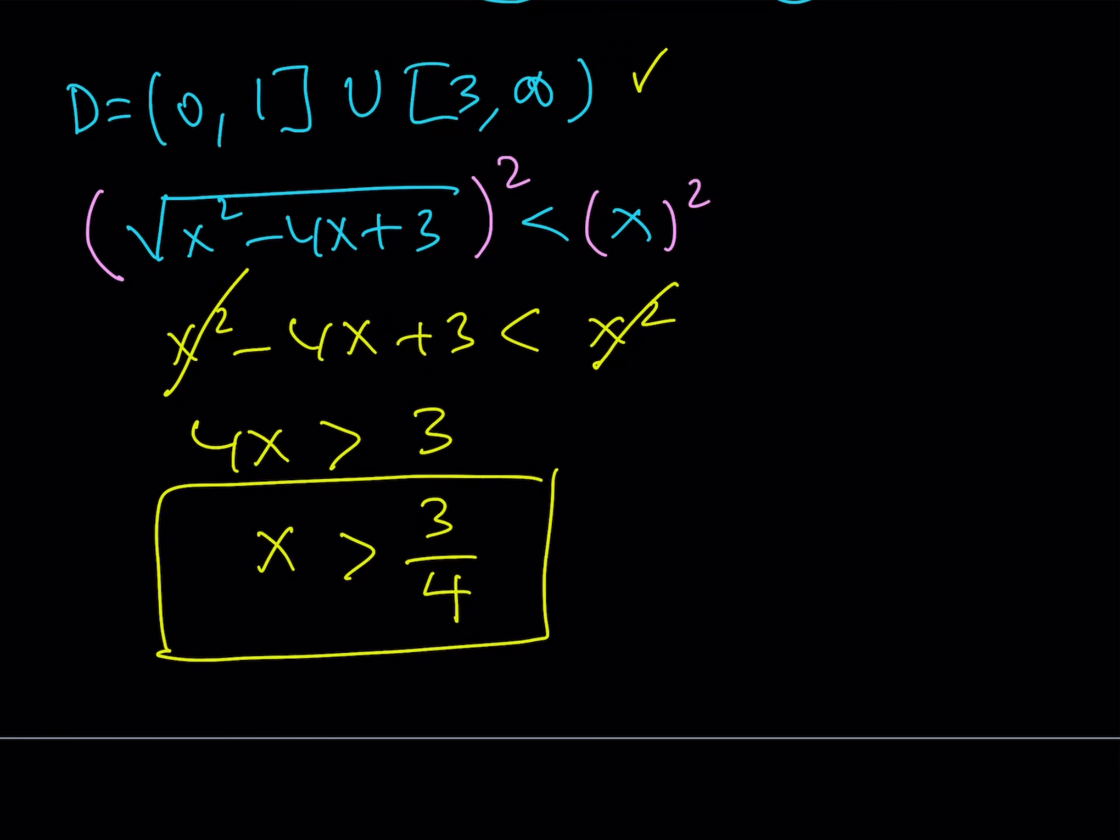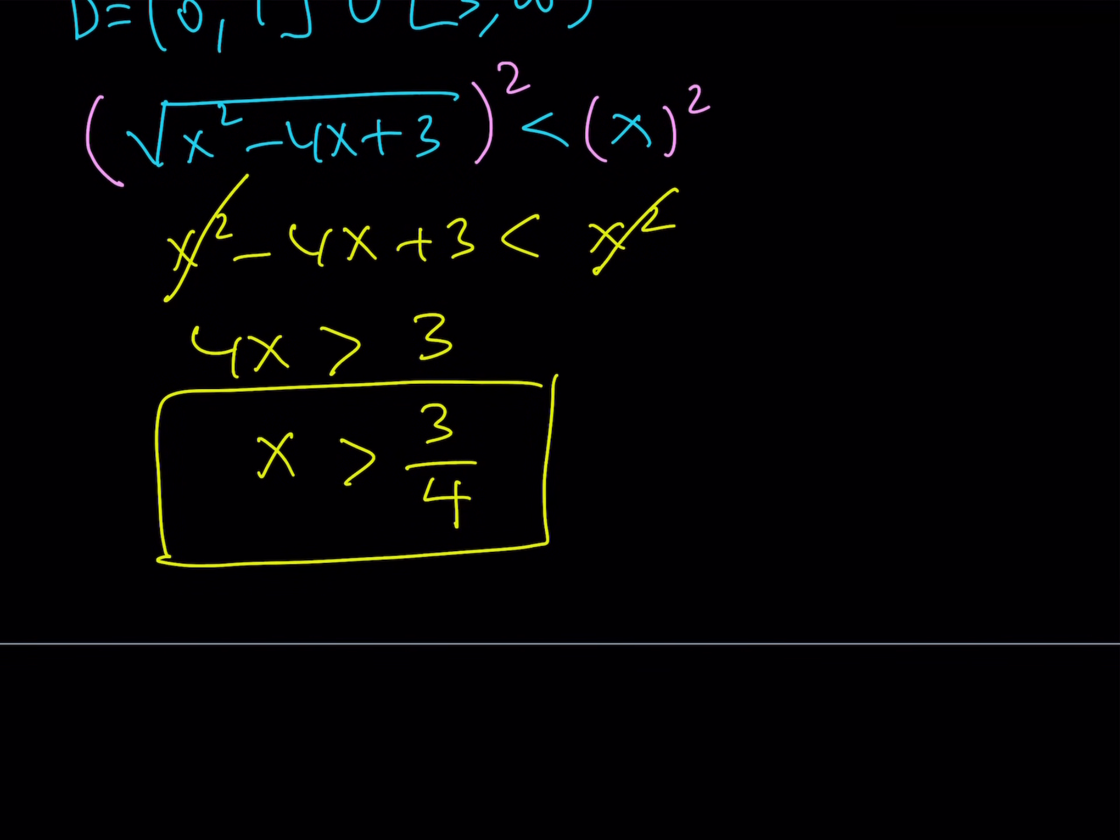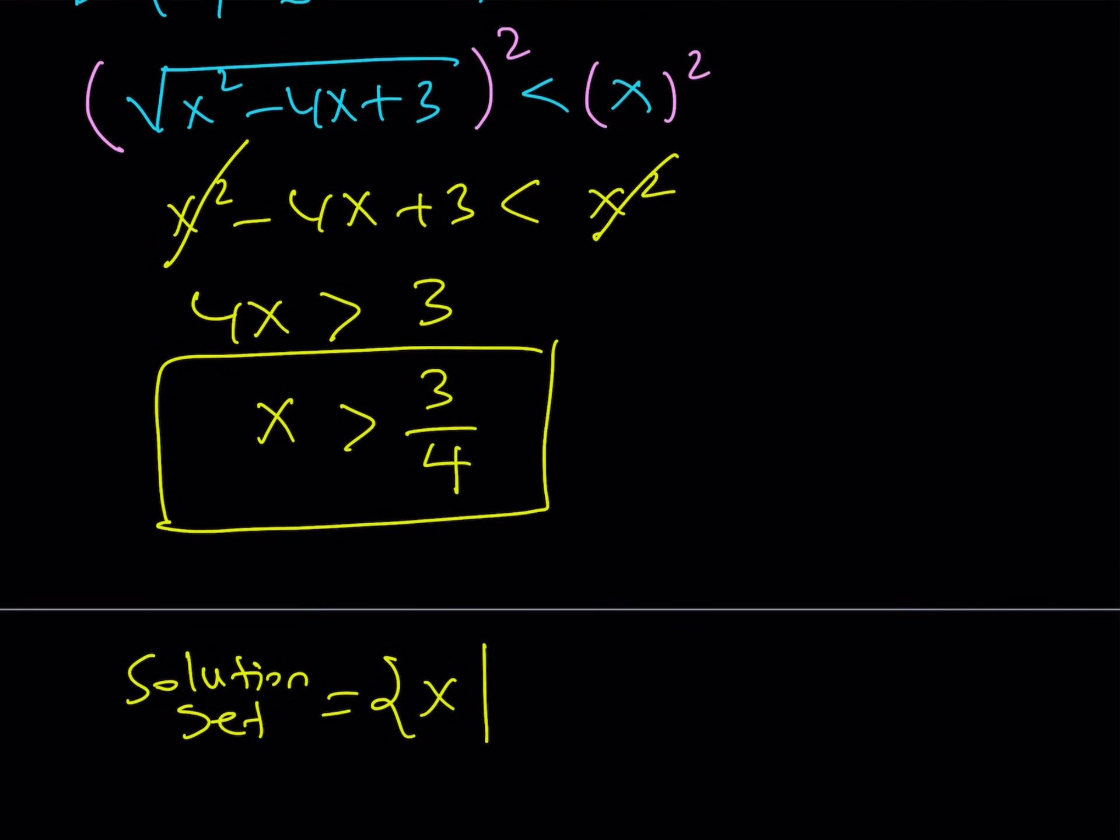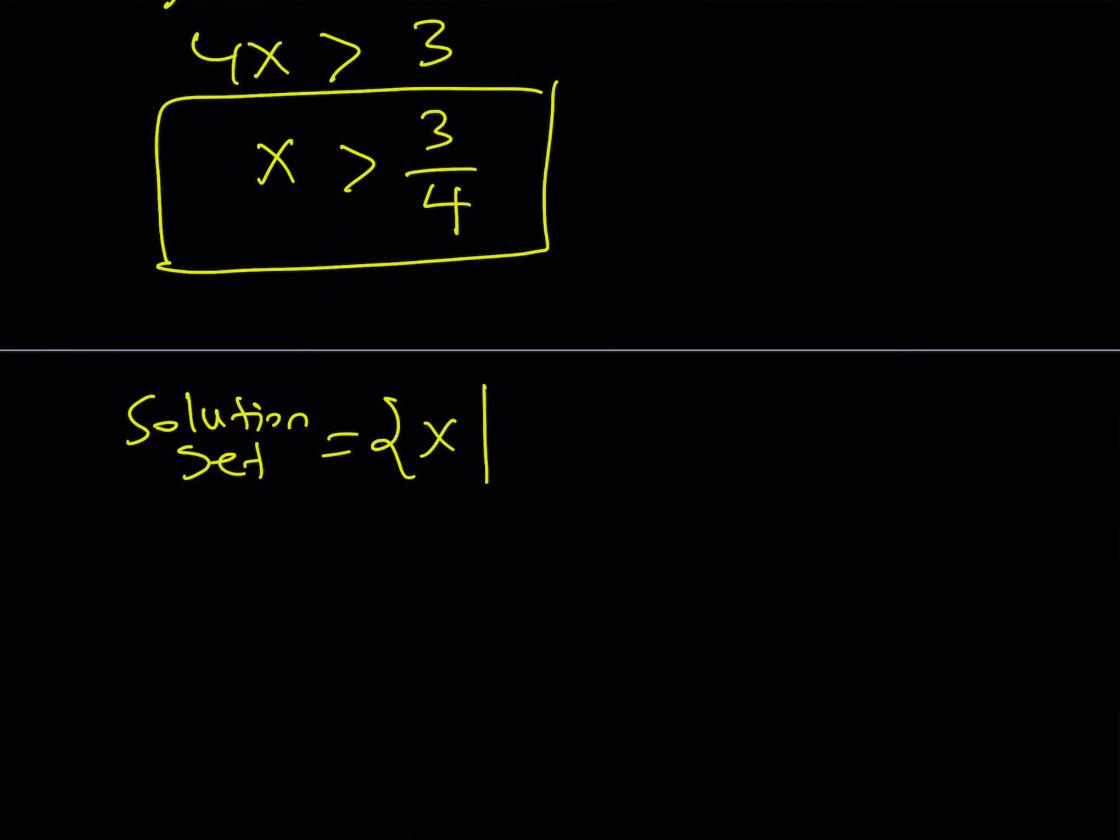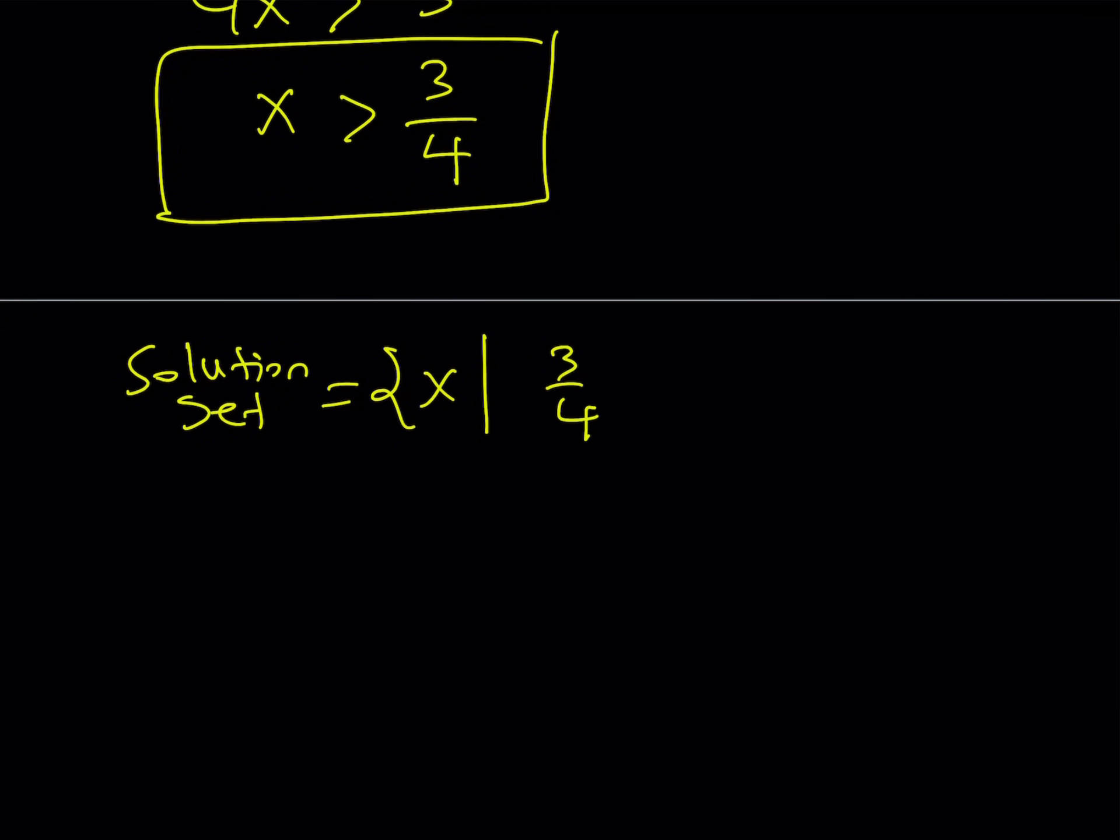if x is greater than 3 fourths, this part is okay, but this part is not completely okay. Why? We have to cut it at 3 fourths. So my solution set then is going to look like this. My solution set, the solution set, is going to be made up of all the x values such that x is between 3 fourths and 1. So I'm going to write it like this. x is between 3 fourths and 1.